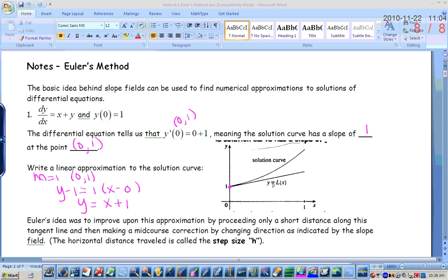Alright, so if I wanted to approximate, say, y of 0.1, I could use the tangent line and the y values are very close at that point. Okay, the problem is, is when you get further and further and further away from that point of tangency, your estimate becomes less accurate. So Euler had an idea to improve upon this approximation by proceeding only a short distance along this tangent line, and then making mid-course correction by changing the direction as indicated by the slope. So what he decided to do is, I'm going to use this tangent line for just a little while, and then I'm going to take this point, and I'm going to reevaluate that using the slope right here, so that I kind of have a better approximation. And then I'm going to move a little bit further, and then I'm going to use that point and go back here and use the slope of the tangent line, or slope of the solution curve, so that I'm following that curve better. Okay, so the horizontal distance traveled is called the step size h, and we'll come back to that in just a second.